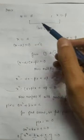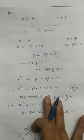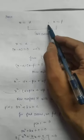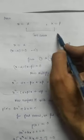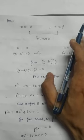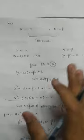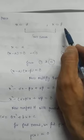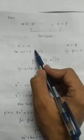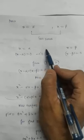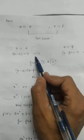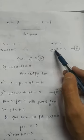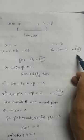Since alpha and beta are the two zeros, the value of x is alpha and the value of x is beta — because zeros of a polynomial are the values of the variable. So x = alpha gives x − alpha = 0 (equation 1), and x = beta gives x − beta = 0 (equation 2).